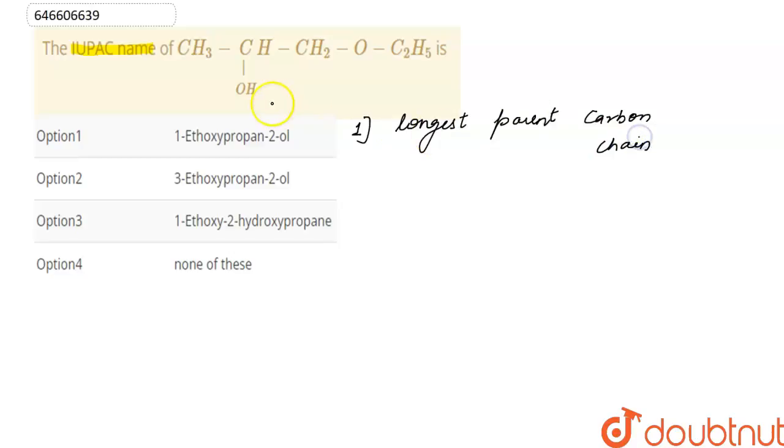As in this given compound we have one OH and ether group present in the given compound, and according to IUPAC nomenclature, OH group has more priority over functional group than ether.